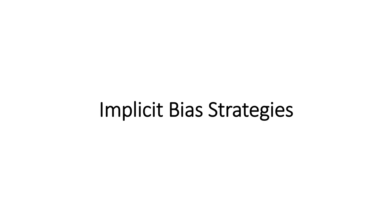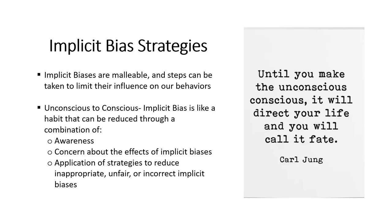Now let's discuss some strategies to address implicit bias. We have to remember that implicit biases are malleable — they can change, they can be updated, and steps can be taken to limit their influence on our behaviors. You have to think of the concept of bringing the unconscious to conscious. Implicit bias is like having a habit that can be reduced through a combination of awareness. First, we have to want to be aware — we want to know how we're doing, and are there areas in which we can improve. So awareness is key. Then concern about the effects of implicit bias: how is it affecting you, your peers, your agency, and your external customers — the vulnerable older adults?